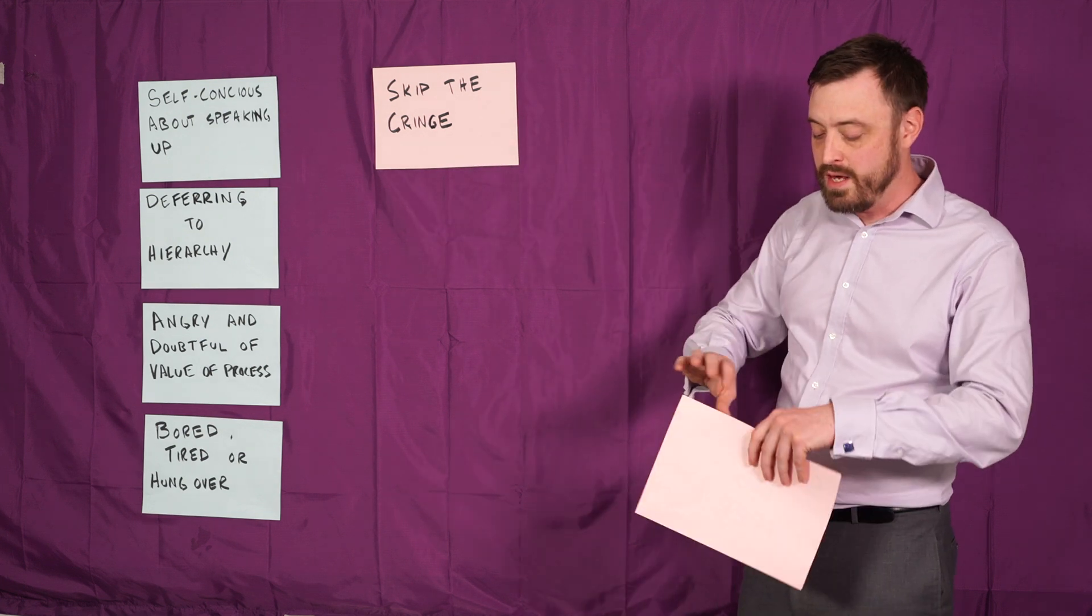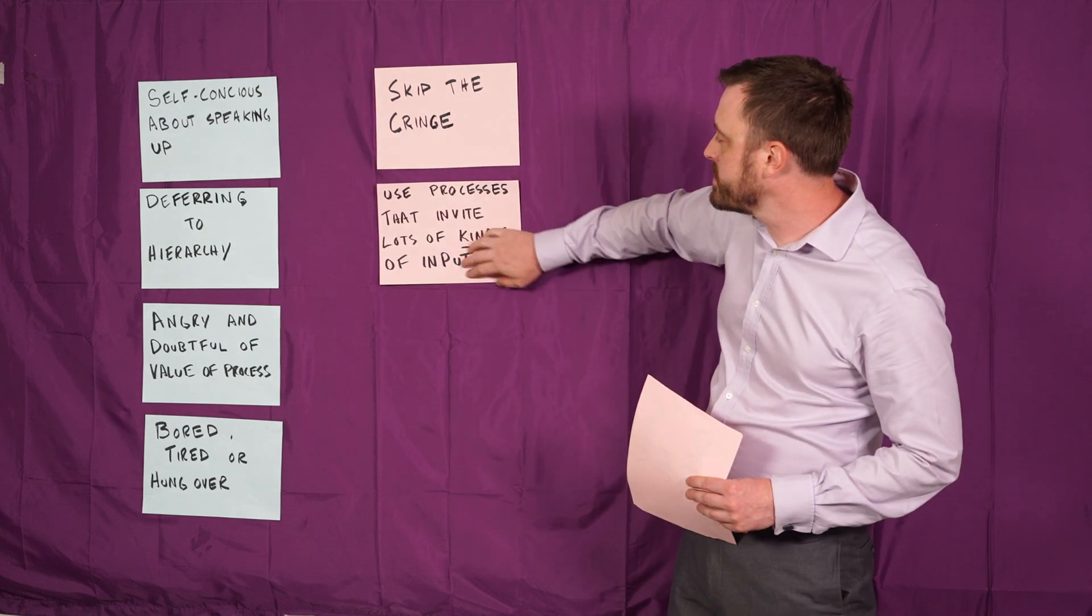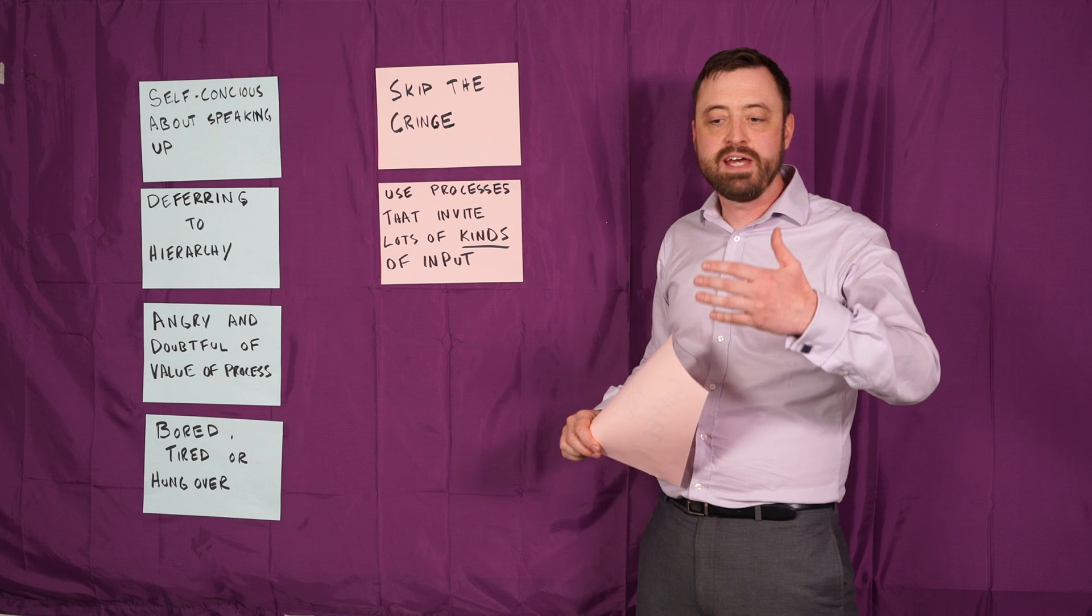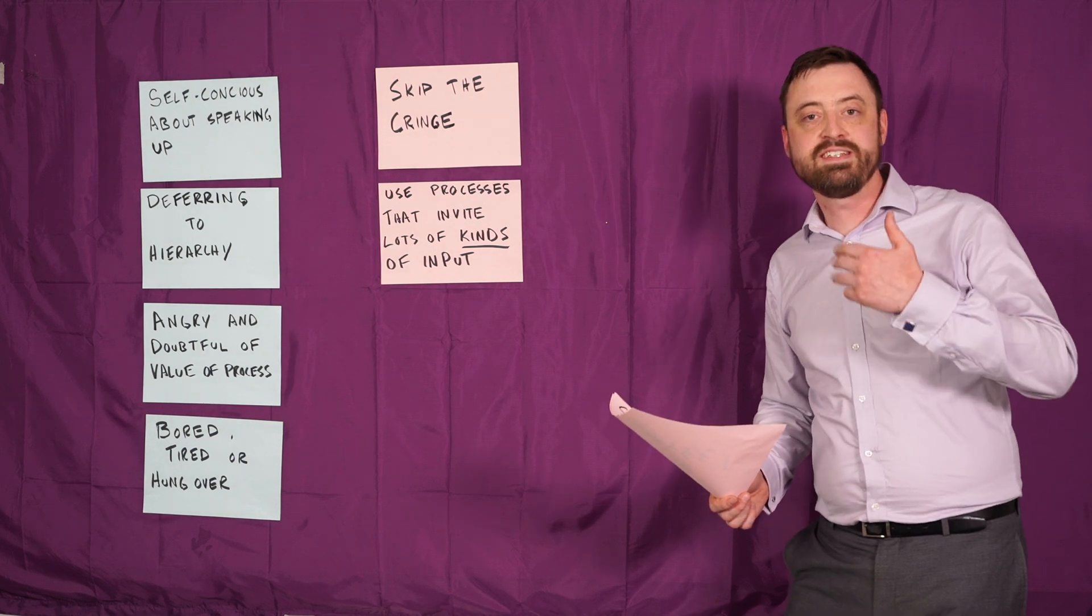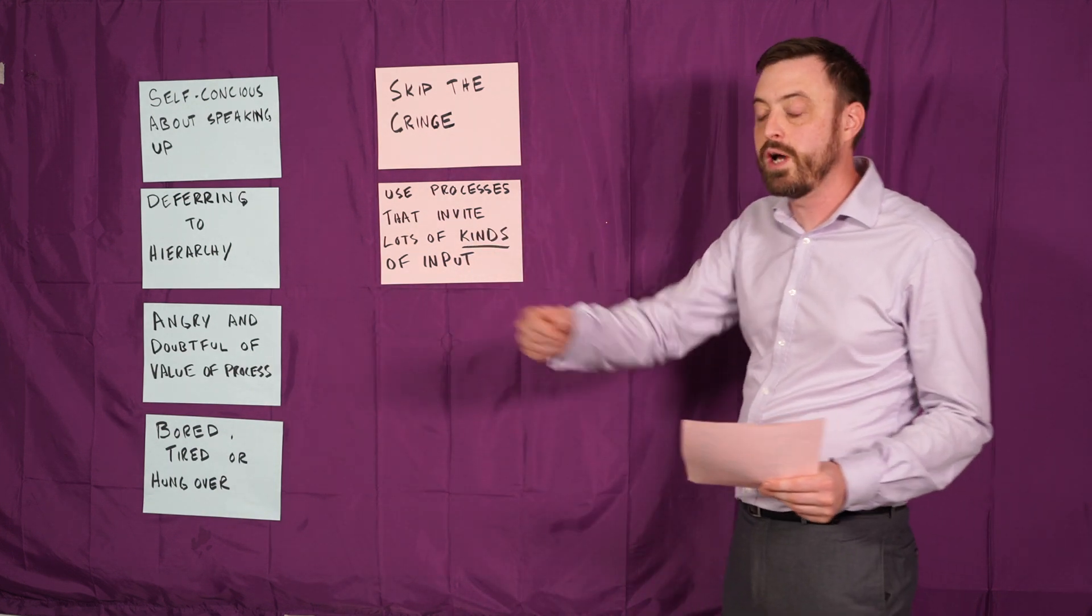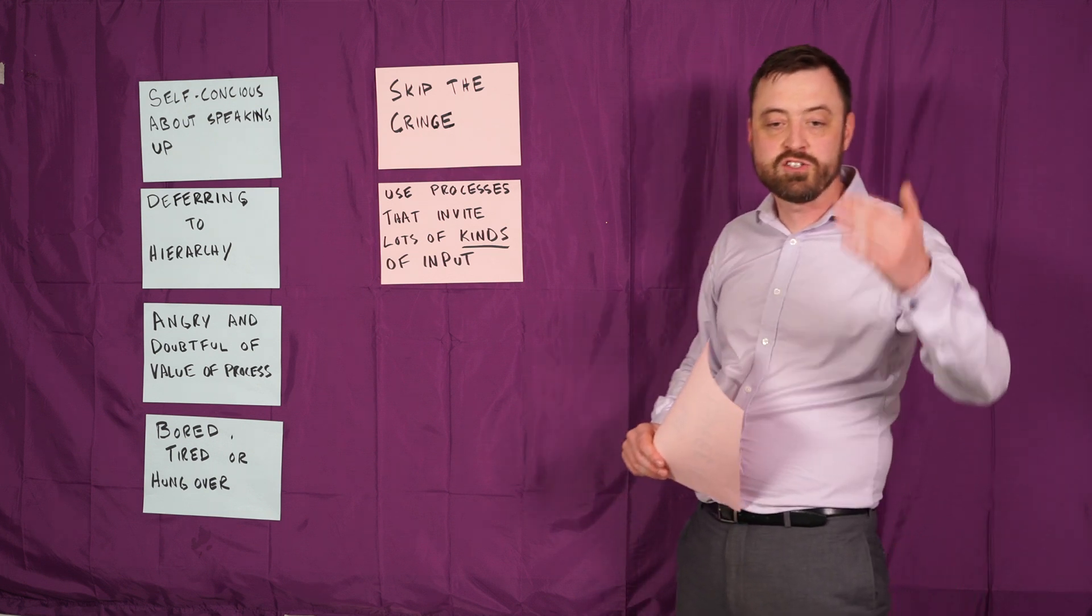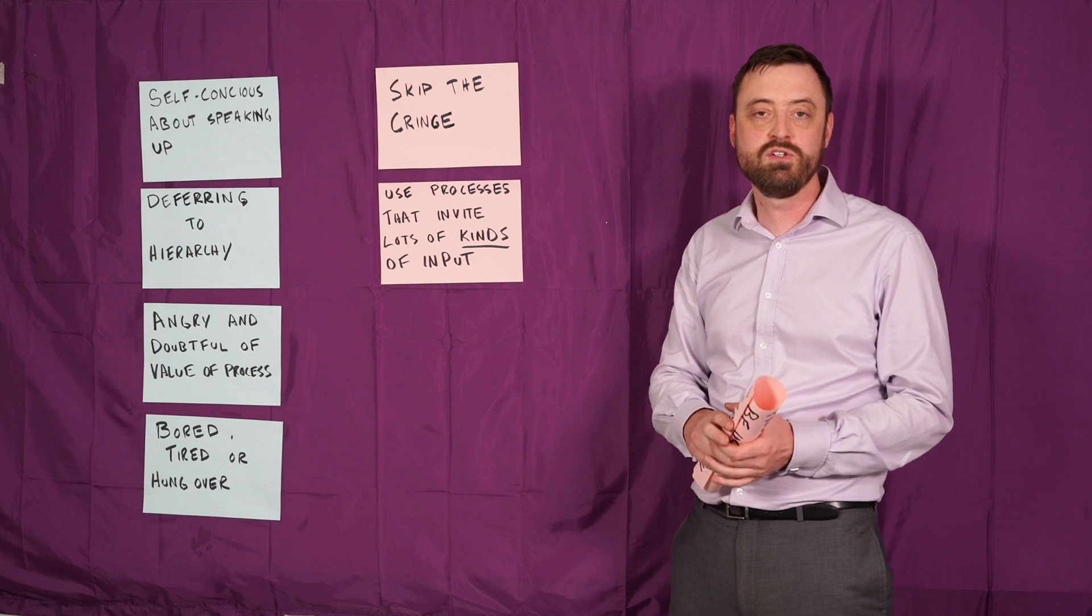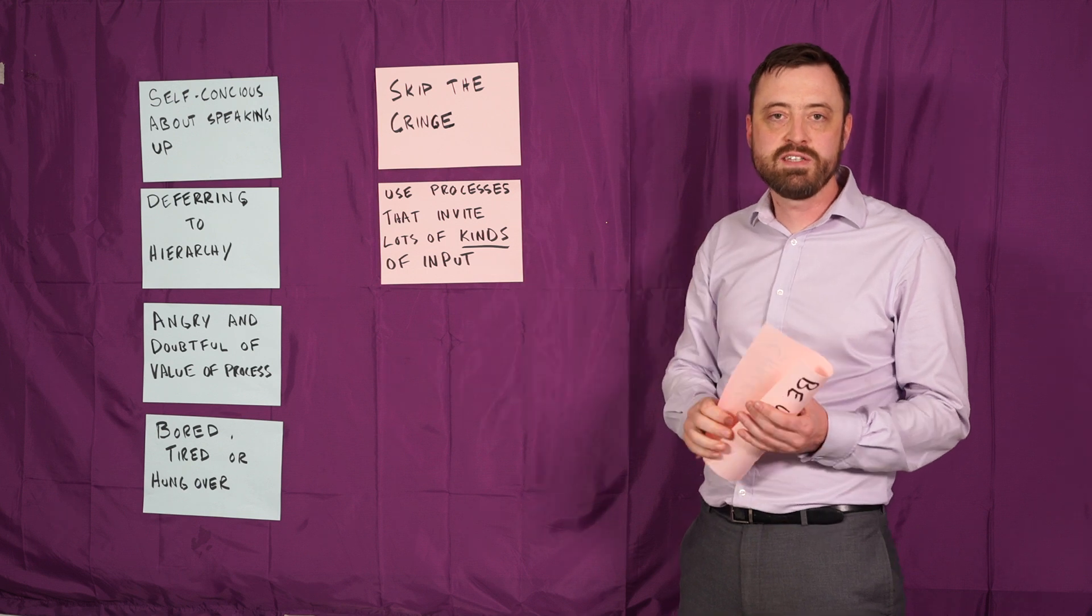Now here's another method: use processes that invite lots of kinds of input. Don't demand that everybody speak up to a room full of 20 or 50 or 100 people. Instead, give them options to write things down on flip charts or cards and get them up on a sticky wall. Give them chances to describe something to a small group instead of the whole room. One of my favorite ways is switching back and forth between small group work and large plenary work, asking for different kinds of input in those different ways and allowing people to participate wherever they're comfortable.